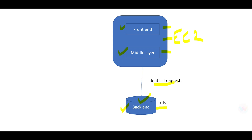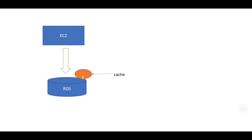The middle layer is sending identical requests — it is firing similar queries again and again, probably because different users are looking for similar information. Whenever you see that identical read requests are being submitted, they will always benefit from caching. Remember this thumb rule: put a cache above RDS.